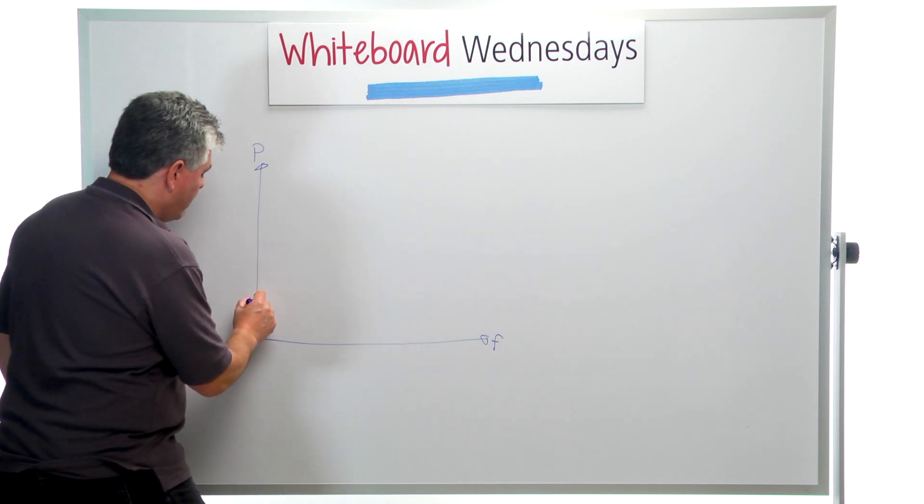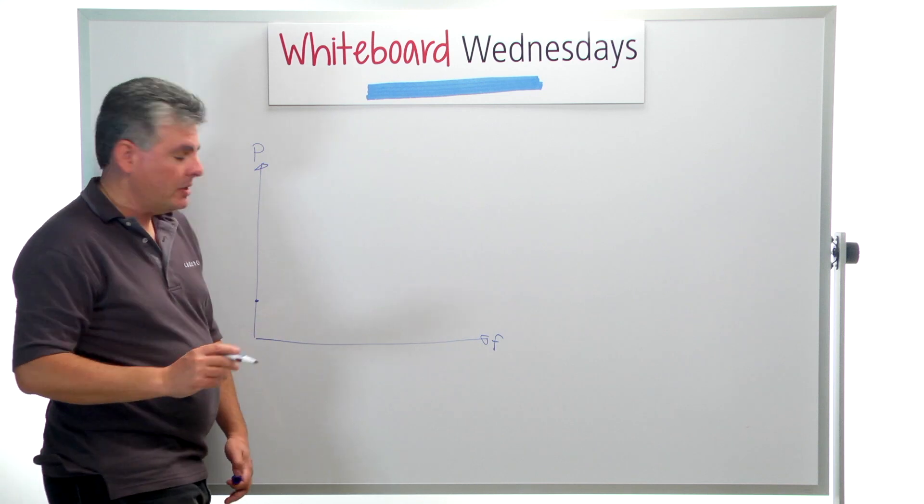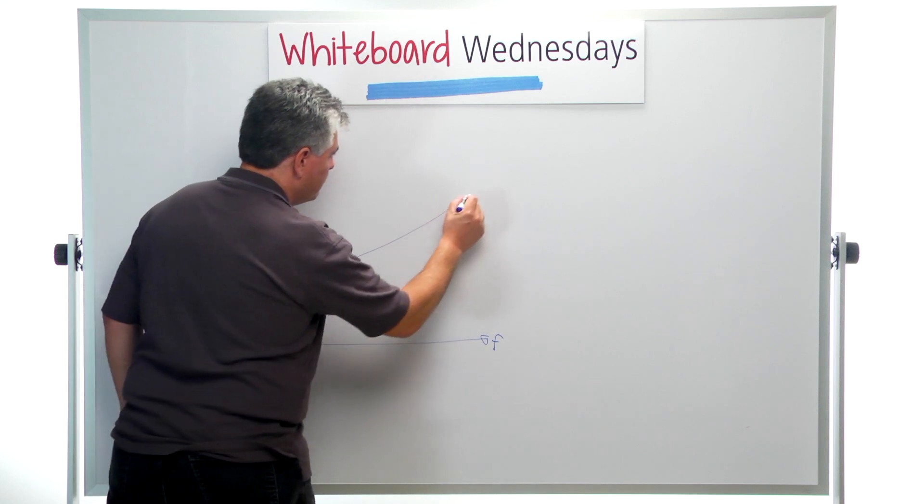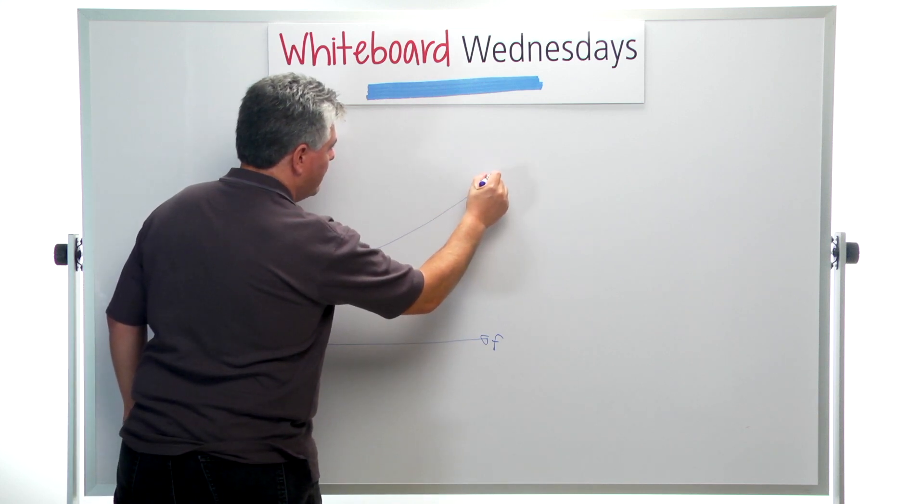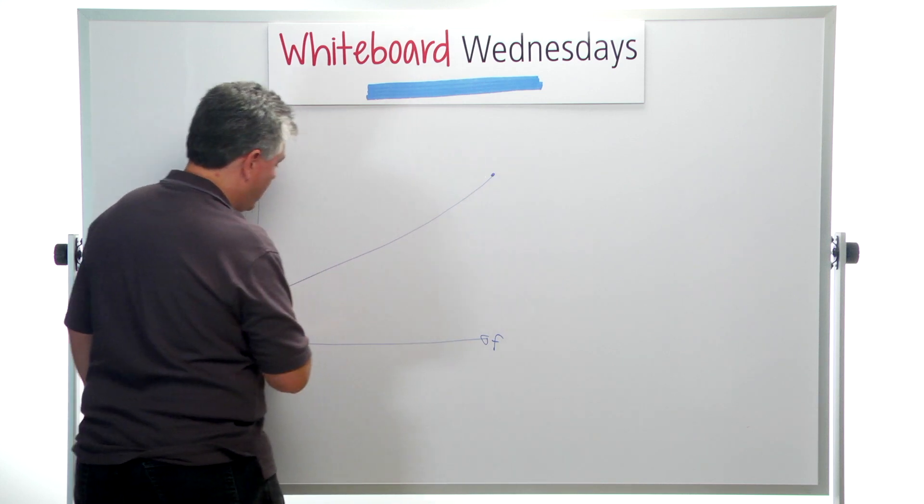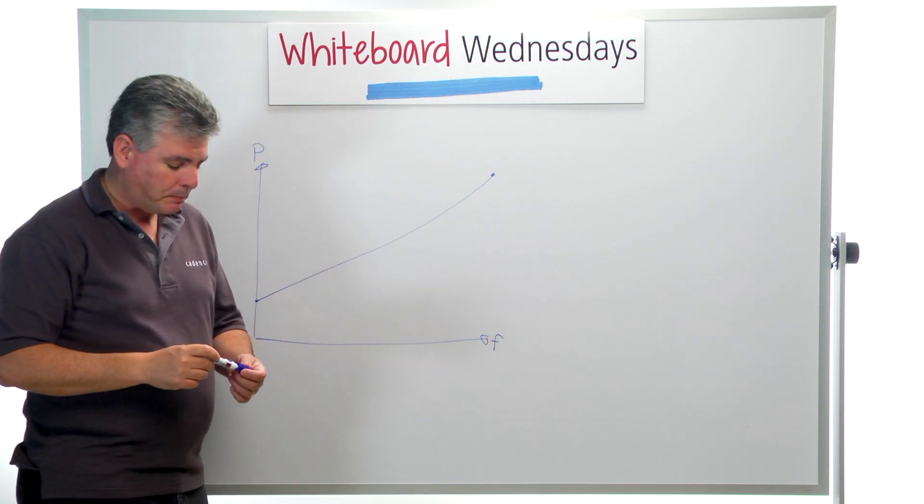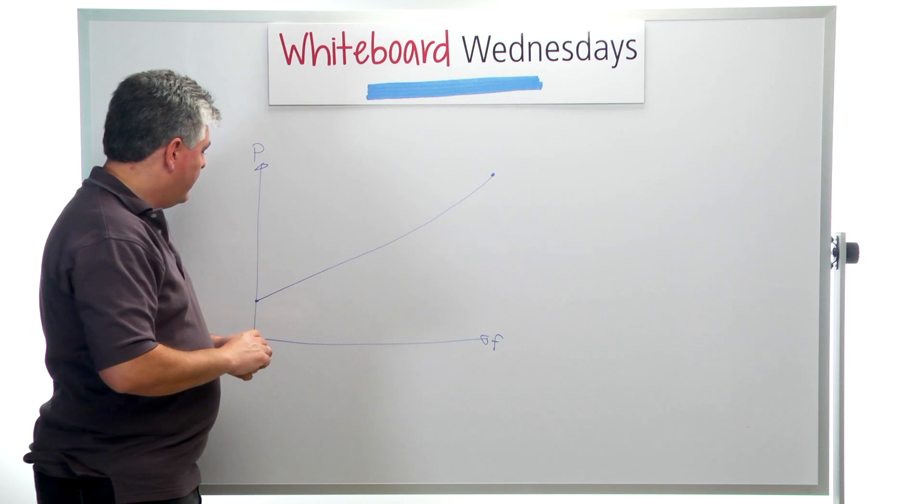And there's some minimum power that the DRAM device uses, and then there is a relatively flattish curve that represents the amount of power used at a given frequency inside the DRAM device.